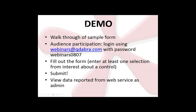Now we're going to jump into our demo — a walkthrough of the sample form with some audience participation. If you've downloaded the Formotus app, use this login: webinars@Qdabra.com with the password webinar0807. We have prepared a form that'll be available when you log in. You're going to fill out the form, enter at least one section from the interest section about controls, and then just hit Submit. Then we're going to view data reported from the web service as an admin. I'm going to paste those credentials into the chat window so everyone has the correct information.